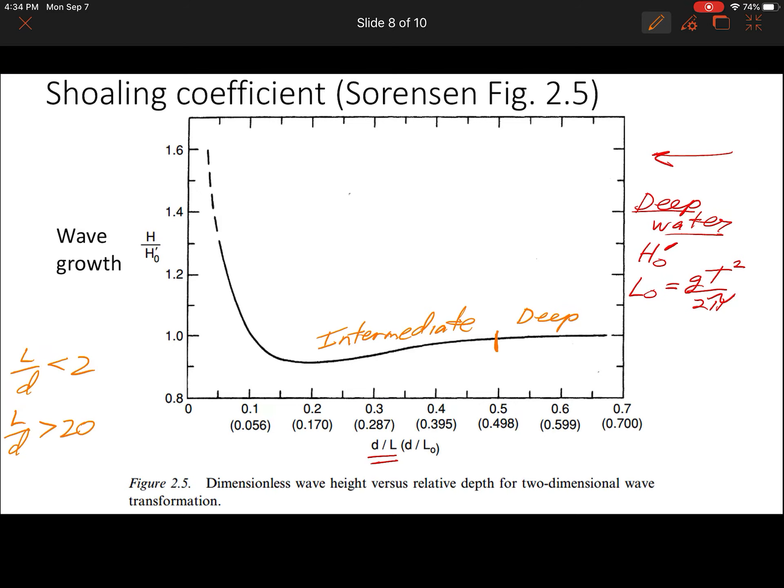Our cutoff of L over d needing to be greater than 20—if we flip that, that's d over L less than 1 over 20, which is 0.05. So that's actually just this portion of the graph here. This would be shallow water waves or long waves.